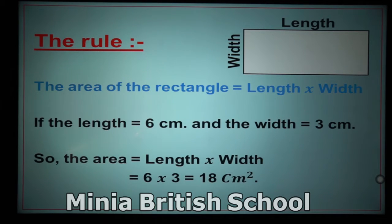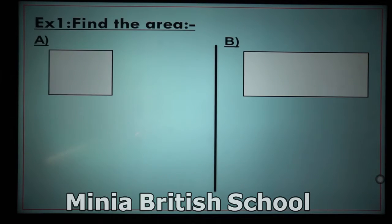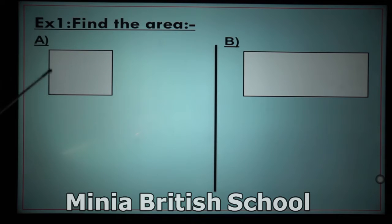Let's revise: the area of the square equals side length times itself, and the area of the rectangle equals length times width.